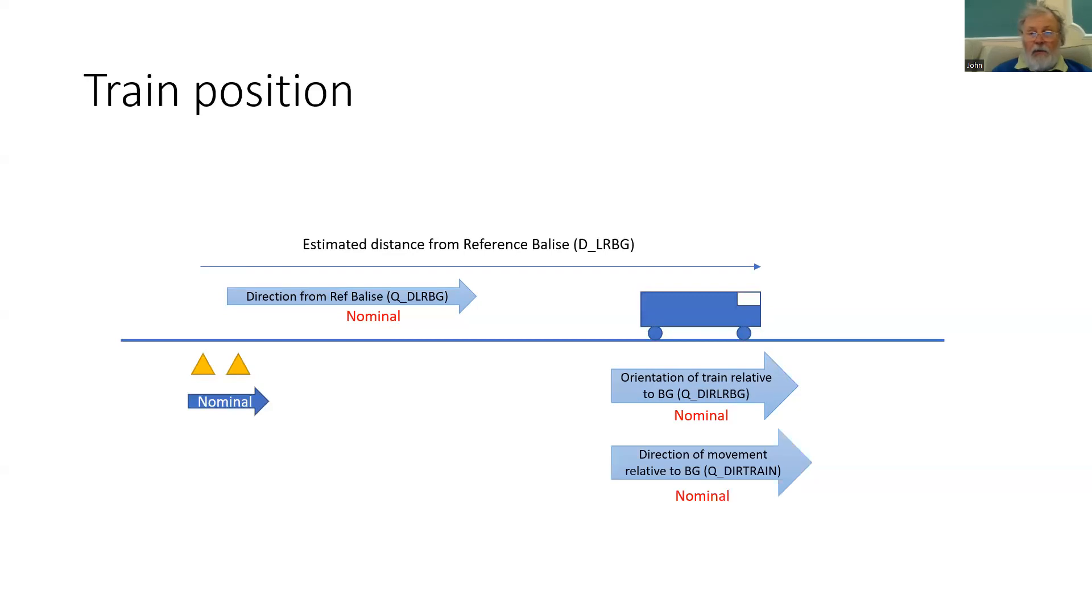And lastly, it will report the direction the train is moving. If the train is normally moving forward, then this variable will be the same as the previous one, nominal again.